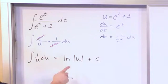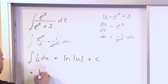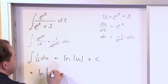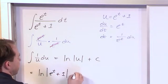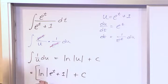But we know that natural log of u, u is defined to be e to the t plus 1, plus a constant like this. Natural log of e to the t plus 1 plus a constant.